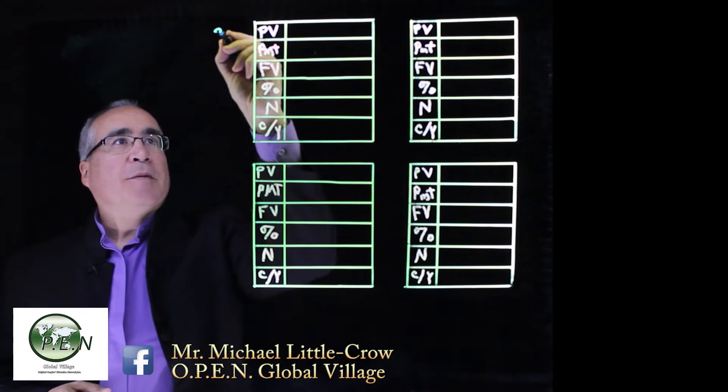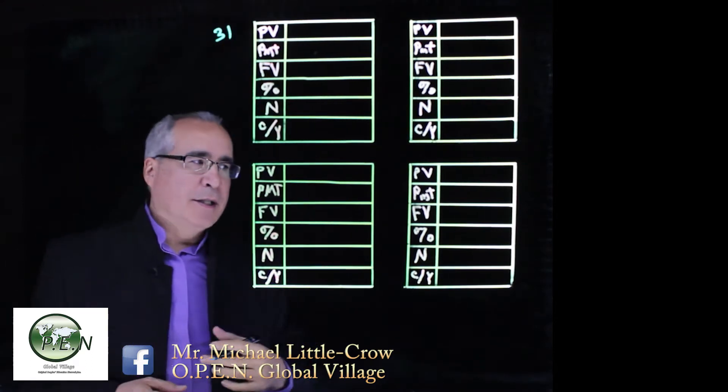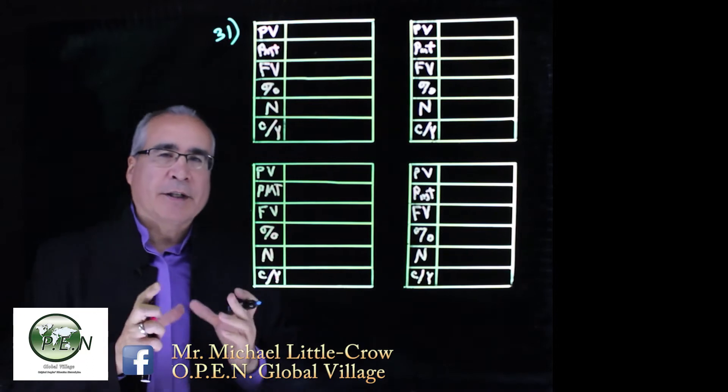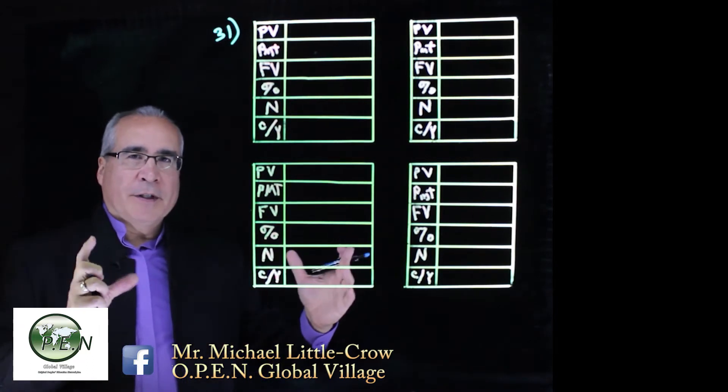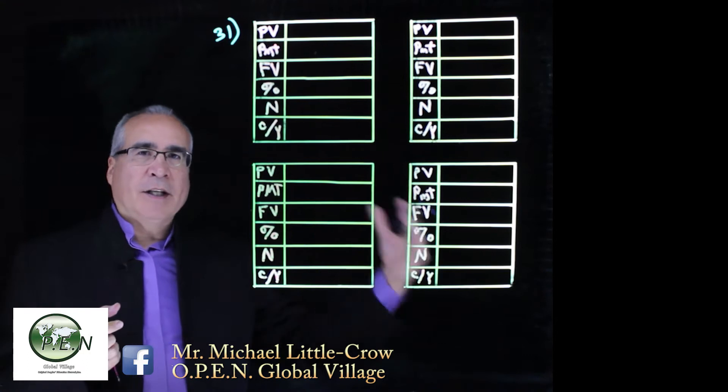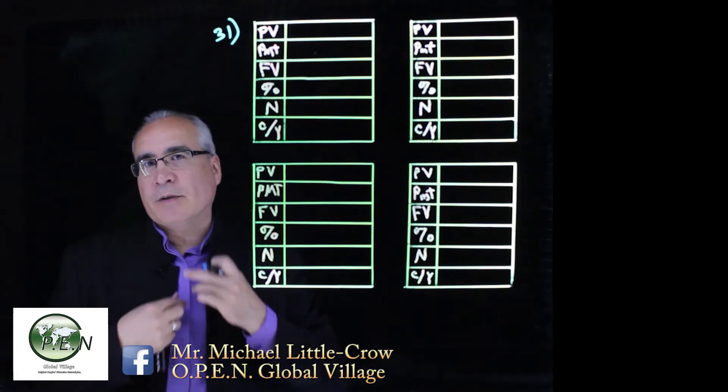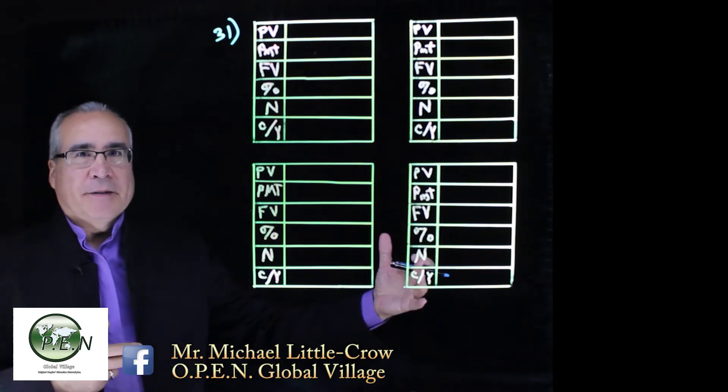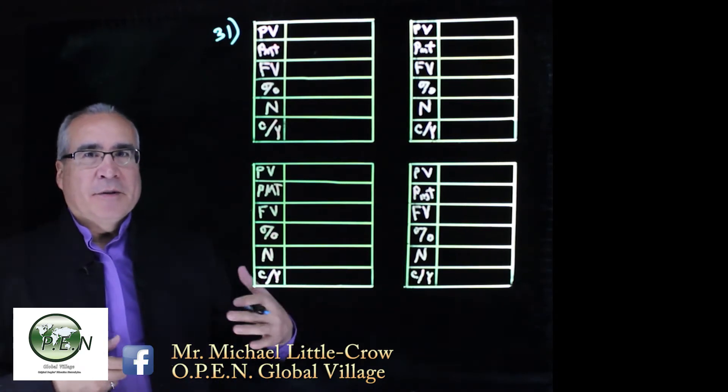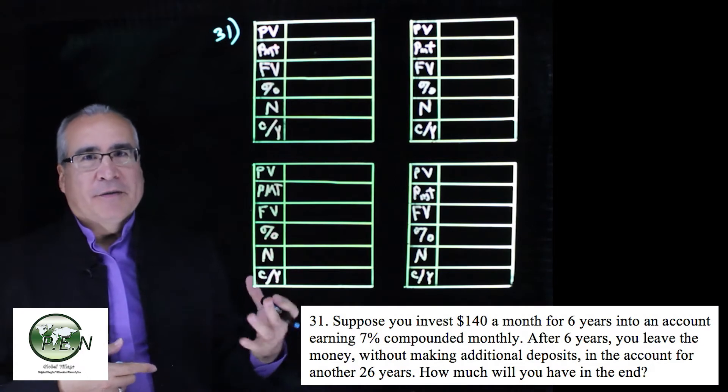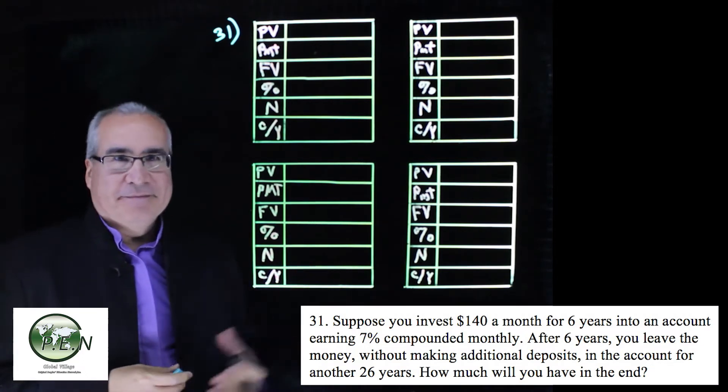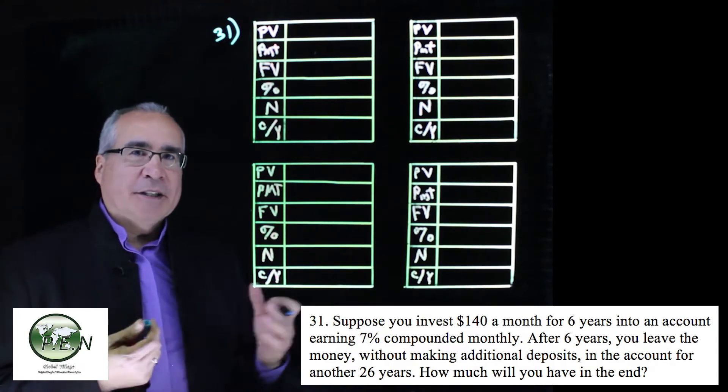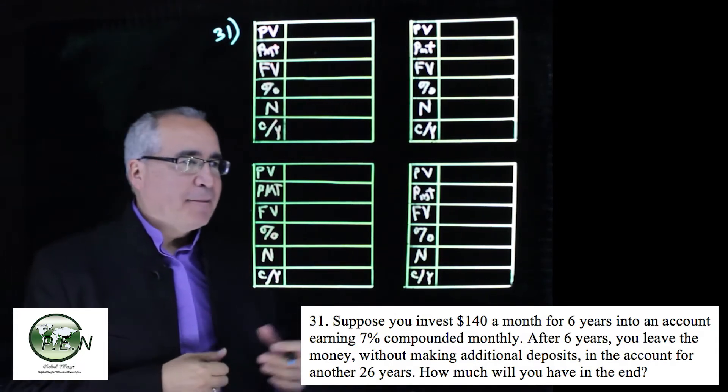Now let's take a look at question 31. In this one and the next, we're going to look at the effect of starting to make an investment for a number of years, stopping, and just letting the money sit. Sometimes we do this, like saving for our child's college fund when they're young. As they get older and become teenagers, they become more expensive, so we need that money for living expenses and let it sit a little bit longer till they go to college.